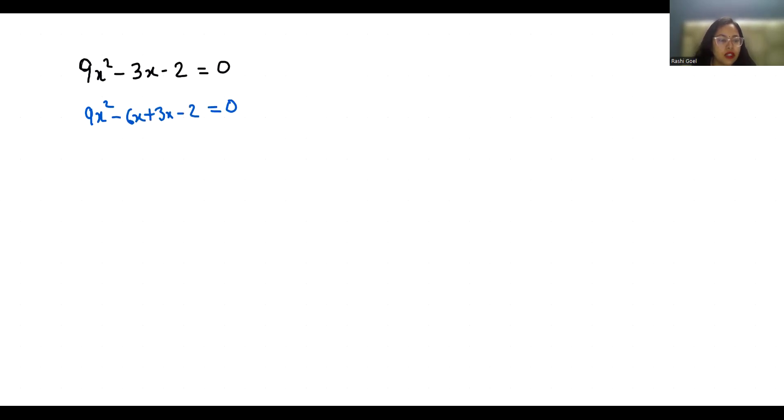Now from the first two terms, if I take 3x as common, I get 3x(3x - 2). If I take 1 as common from the last two terms, I get 1(3x - 2). Now 3x - 2 is common, so (3x - 2)(3x + 1) = 0.